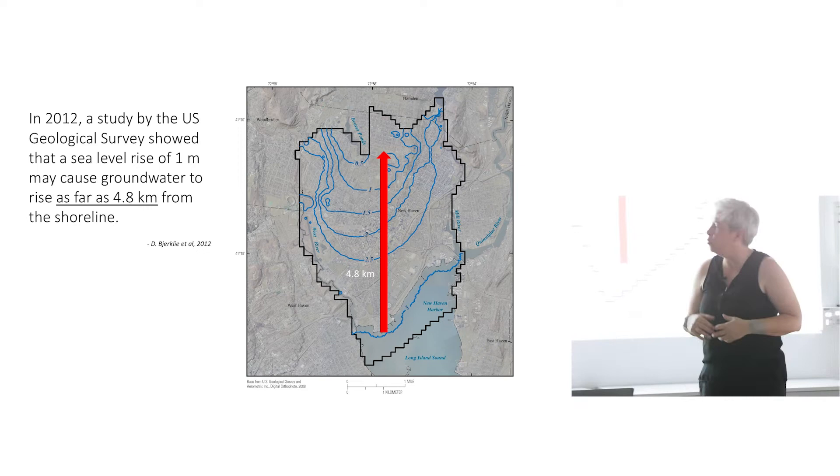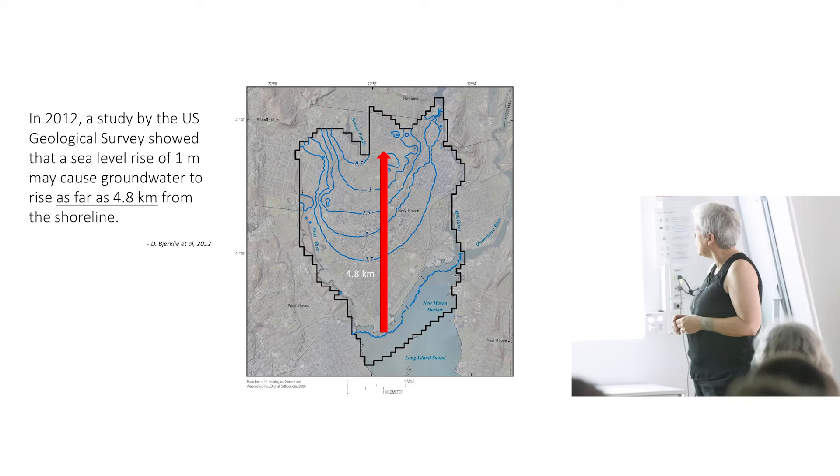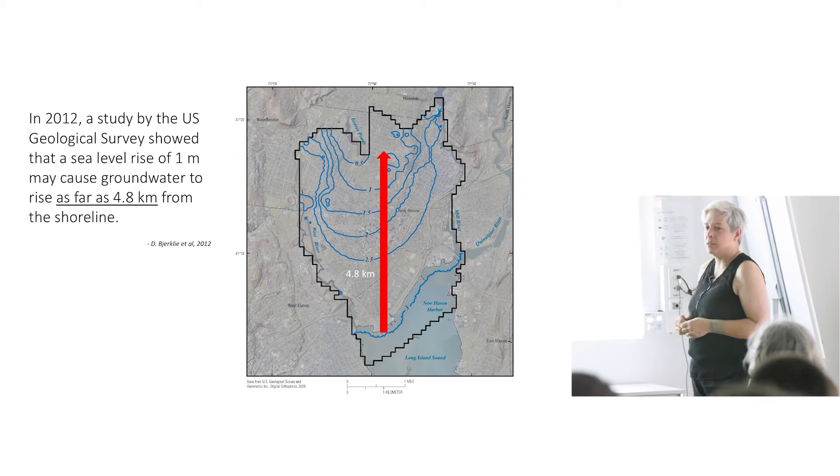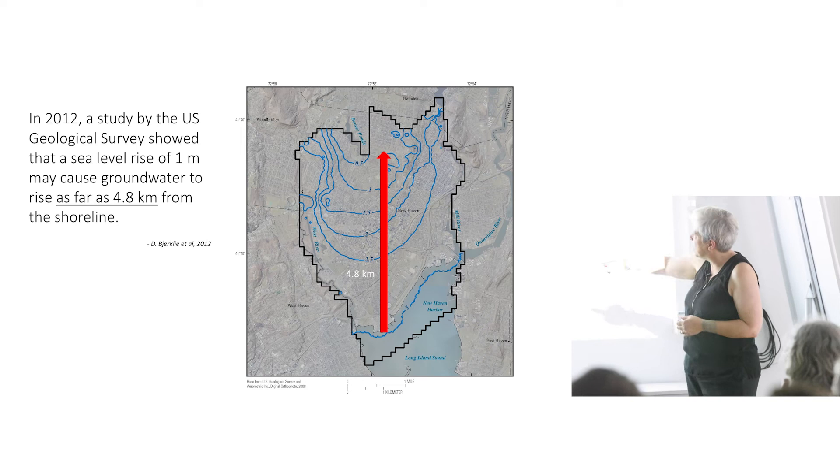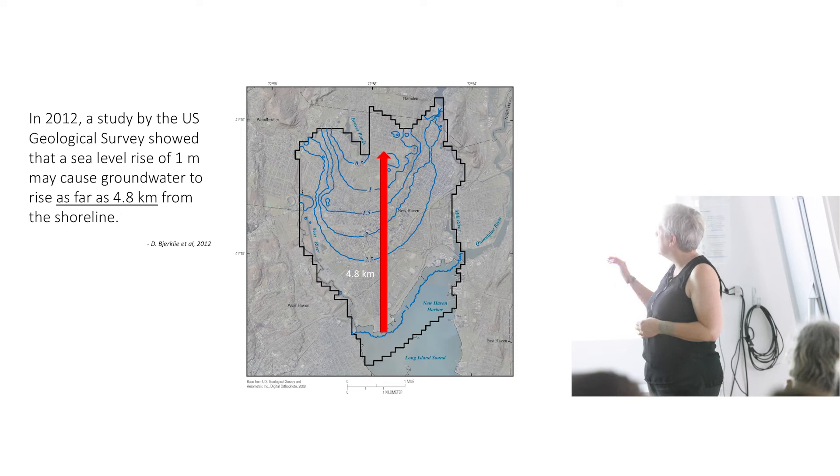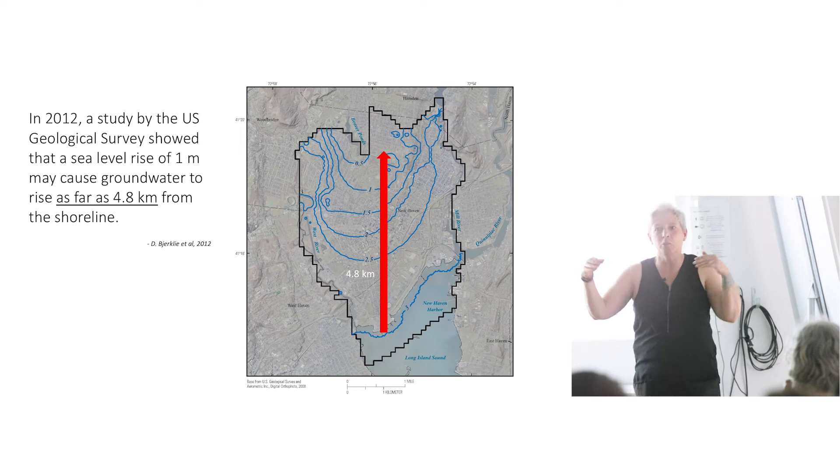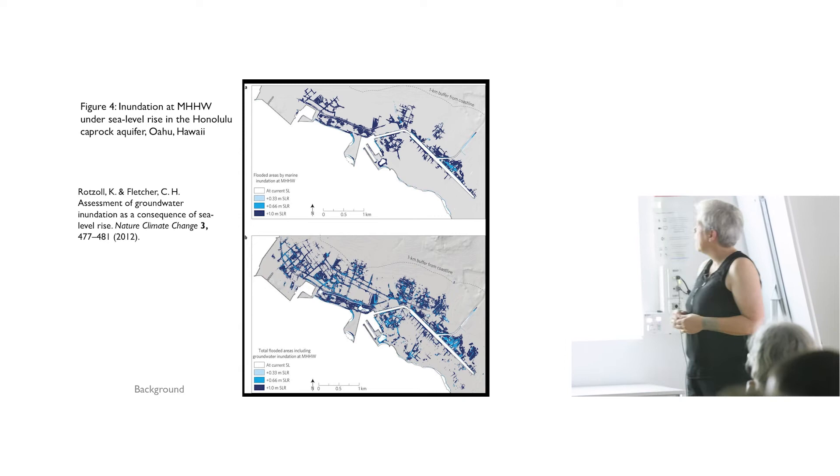People are trying to do studies, modeling to figure out how far inland this impact is going to extend with our wild, undocumented groundwater. This one was done by the US Geological Survey. It showed that it could extend as far inland as 4.8 kilometers. Three feet of sea level rise is shown at the bottom with that first blue line. And then the groundwater is only rising half a foot, six inches, maybe 15 centimeters, as it goes inland. So it has less of an impact as it goes farther inland, but still enough that it could affect contaminants and pipes.